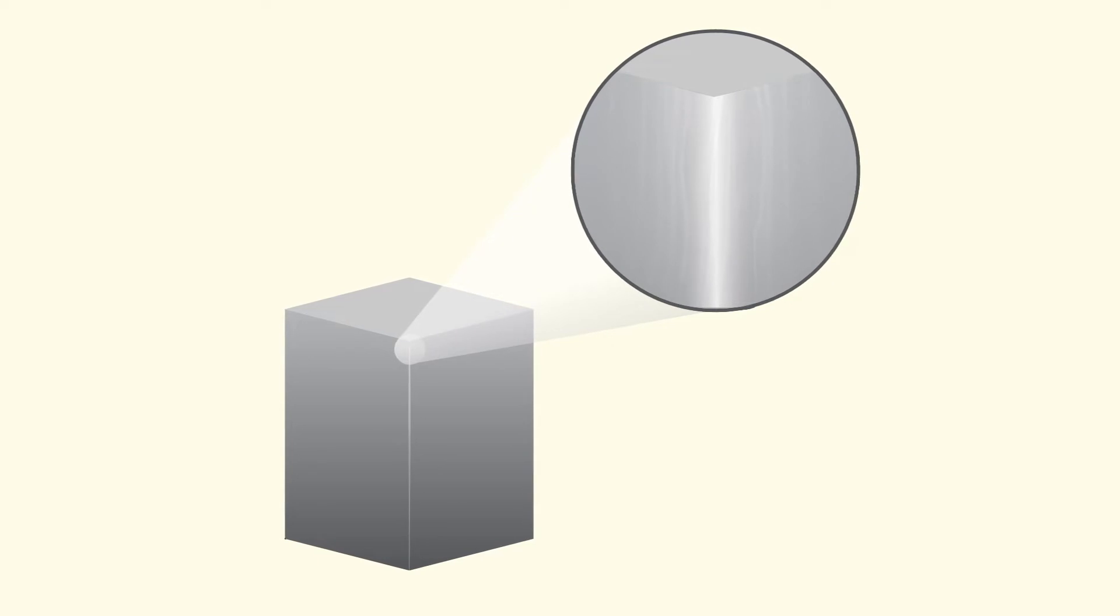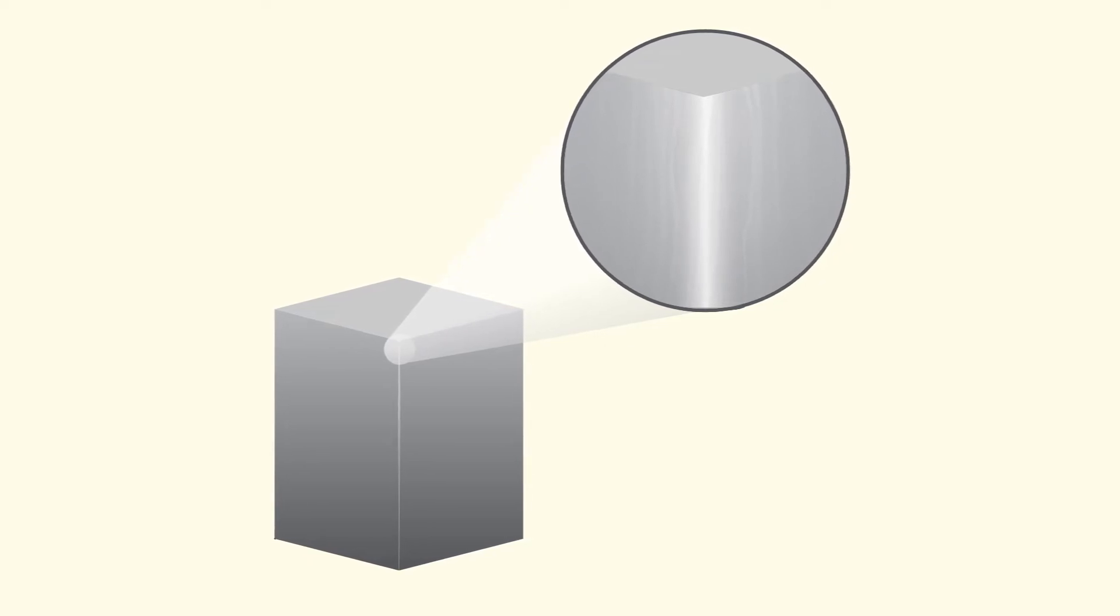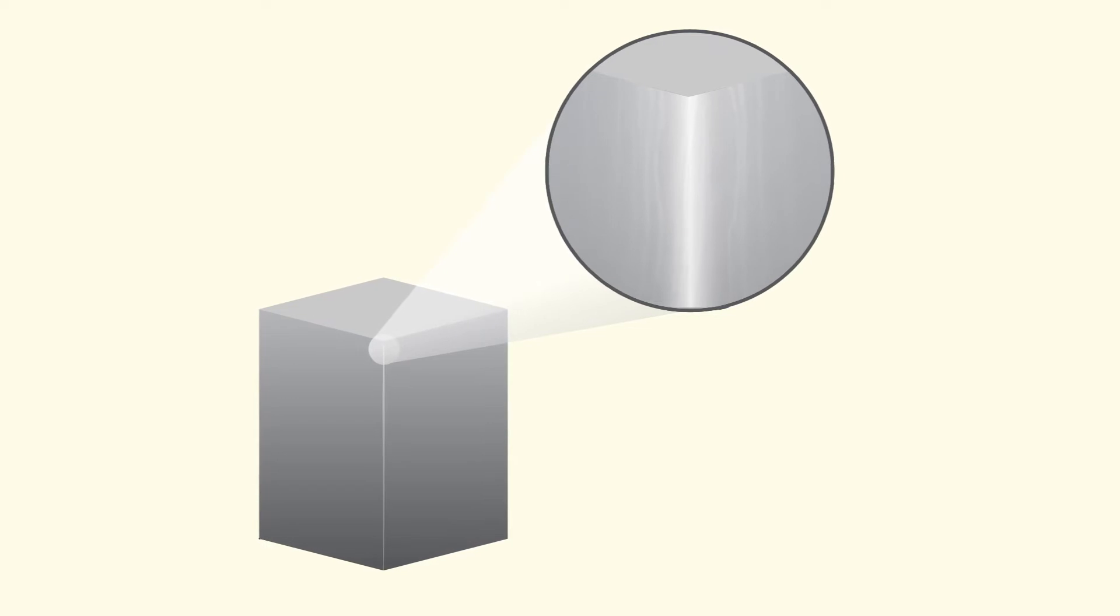Crazing occurs because the outer side of the bend is stretched more than the inner side and appears as a frosted effect.